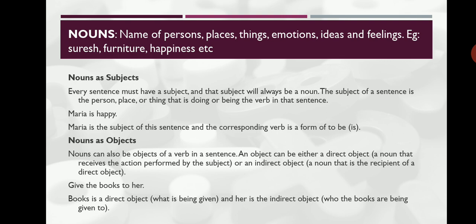Nouns can also be objects of a verb in a sentence. An object can either be a direct object or an indirect object. Usually the objects are nouns or pronouns. For example, 'Give the books to her.' Here 'books' is the direct object — a noun — and 'her' is the indirect object, which is a pronoun.